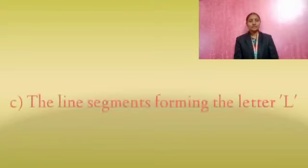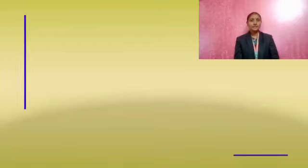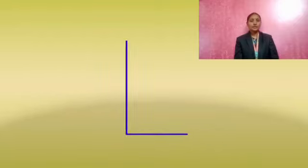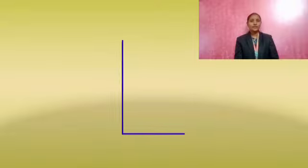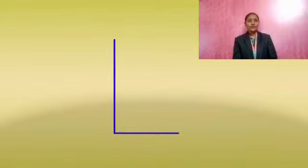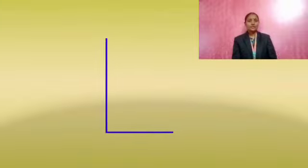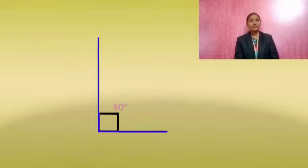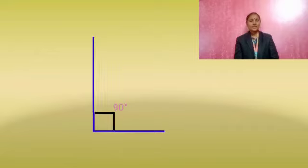Option C: the line segments forming the letter L. These are the two line segments forming this letter L. The angle formed at the intersecting point of these two line segments is a right angle or 90 degrees, so these two line segments are perpendiculars. Hence, it is a model of perpendicular lines.